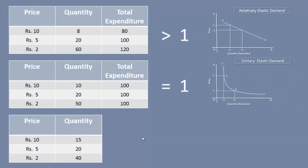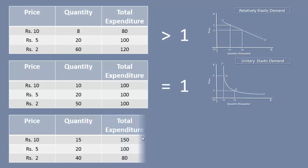Let us observe one more demand schedule. We have to calculate the total expenditure to find out its elasticity. We shall begin with Rs. 5. When the price falls from Rs. 5 to Rs. 2, the total expenditure also falls from Rs. 100 to Rs. 80.